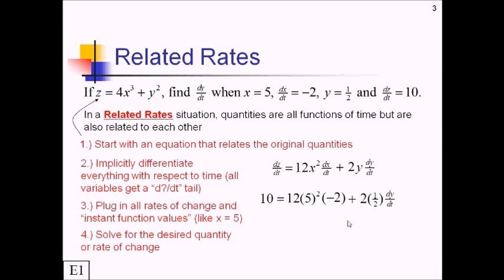So simplifying things here, this is going to be, let's see, 25 times 12. That's like having 12 quarters. So that's a grand total of 300 cents times negative 2, that's negative 600, plus these cancel out, so that's dy over dt. Adding 600 to the other side, we get dy over dt equals 610.